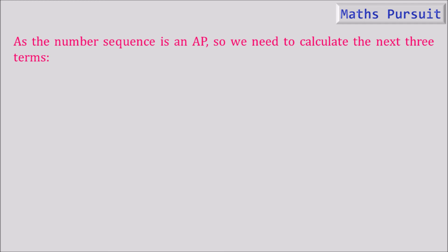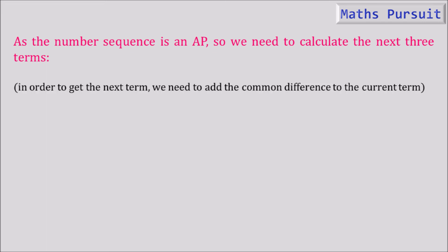As the number sequence is an AP, we need to calculate the next three terms. To get each next term, we add the common difference to the current term. So we will determine A5, A6, and A7.